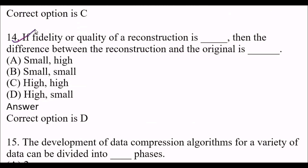Next question: If fidelity or quality of reconstruction is blank, then the difference between the reconstruction and the original is blank. Option A: small, high. Option B: small and small. Option C: high and high. Option D: high and small. The right answer is option D, high and small. If fidelity or quality of reconstruction is high, then the difference between the reconstruction and the original is small.